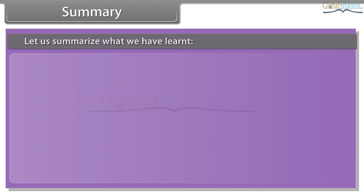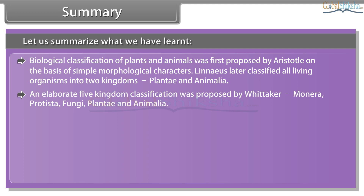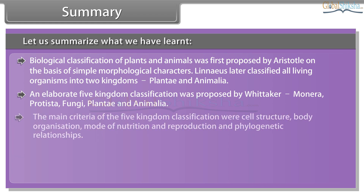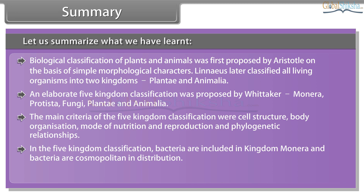Summary: Biological classification of plants and animals was first proposed by Aristotle on the basis of simple morphological characters. Linnaeus later classified all living organisms into two kingdoms, Plantae and Animalia. An elaborate five kingdom classification was proposed by Whittaker: Monera, Protista, Fungi, Plantae, and Animalia. The main criteria were cell structure, body organization, mode of nutrition and reproduction, and phylogenetic relationships. In the five kingdom classification, bacteria are included in kingdom Monera, and bacteria are cosmopolitan in distribution, showing the most extensive metabolic diversity.